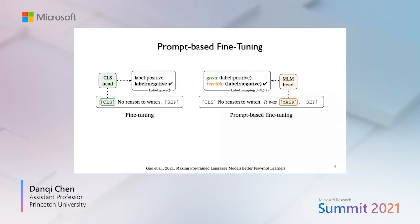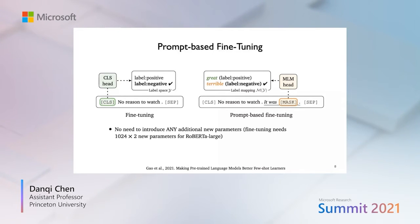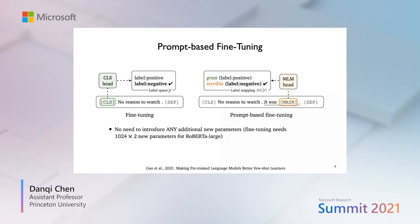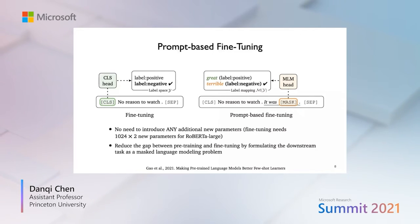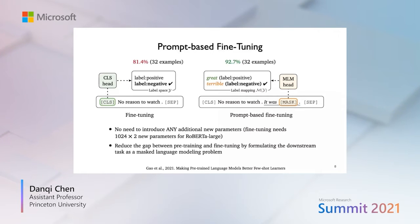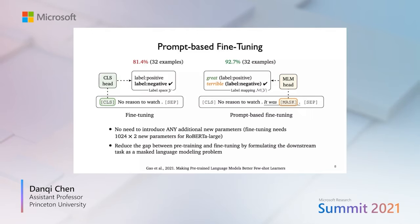Compared to standard fine-tuning, prompt-based fine-tuning has two big advantages. First, it doesn't introduce any additional new parameters — we just reuse the parameters for word predictions used during pre-training. In contrast, standard fine-tuning needs to add at least 2048 new parameters for a binary classification task in a RoBERTa-large model. Second, by formulating the downstream task as a masked language modeling problem, it effectively reduces the gap between pre-training and fine-tuning. In our experiments using only 32 examples, standard fine-tuning achieves 81.4% accuracy, but prompt-based fine-tuning achieves 92.7% — a very big improvement.